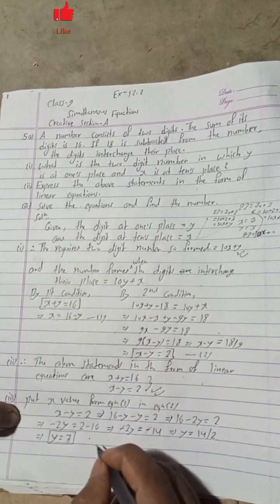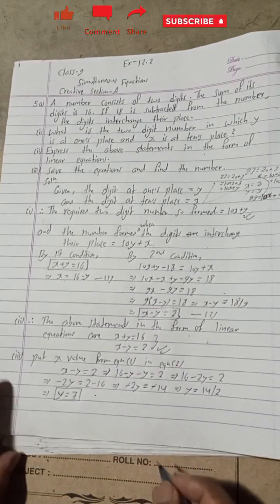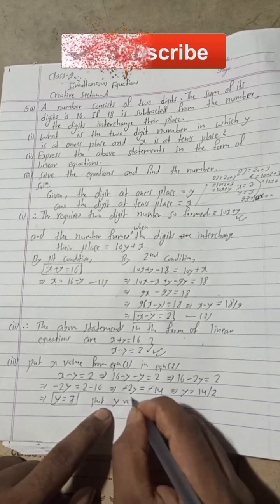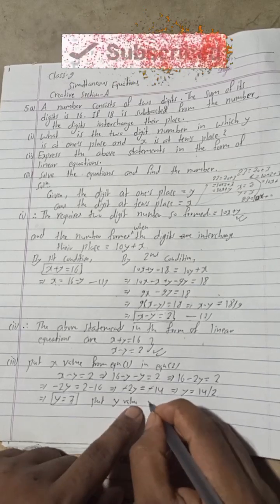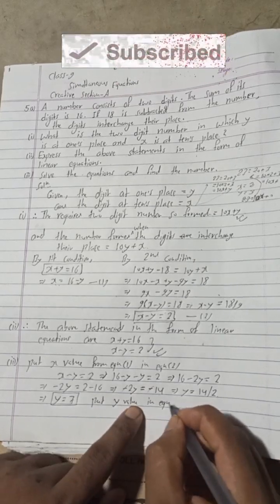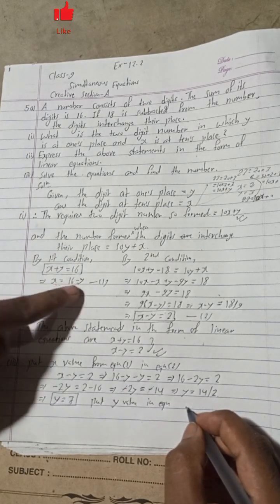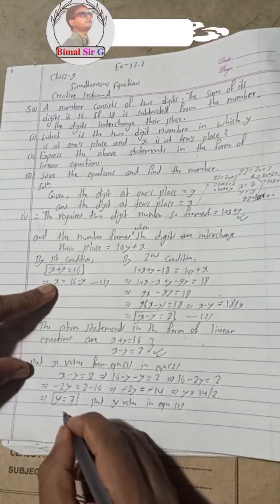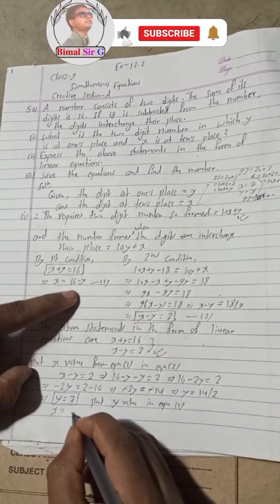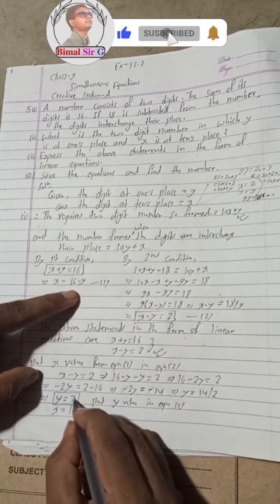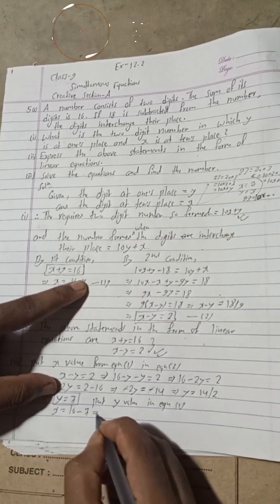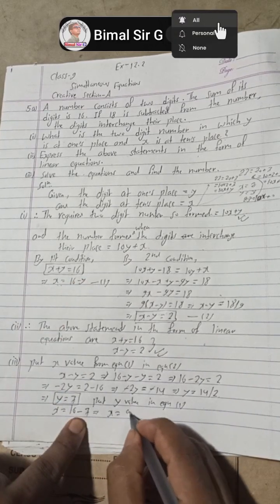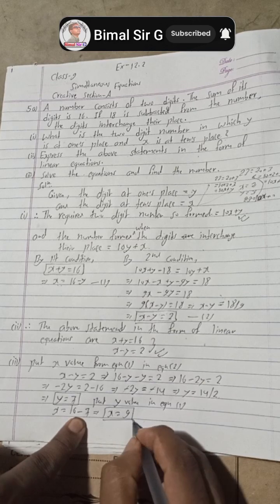Now put the y value in equation 1. When we put y equals 7, we get x equals 16 minus y, so x equals 16 minus 7, which is 9. So we got x equals 9.